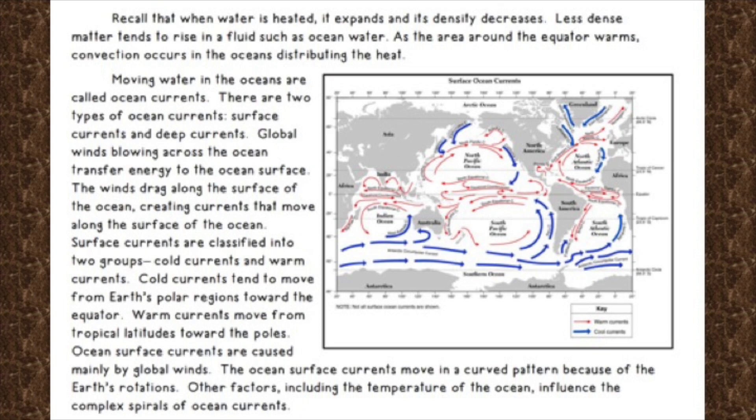Hopefully, you recall that when water is heated, it expands and its density decreases. Less dense matter tends to rise in a fluid such as ocean water. As the area around the equator warms, convection occurs in the oceans distributing the heat. Moving water in the oceans are called ocean currents. There are two types of ocean currents, surface currents and deep currents. Global winds blowing across the ocean transfer energy to the ocean. The winds drag along the surface of the ocean, creating currents that move along the surface of the ocean. Surface currents are classified into two groups, cold currents and warm currents. Cold currents tend to move from Earth's polar regions toward the equator. Warm currents move from the tropical latitudes toward the poles. Ocean surface currents are caused mainly by global winds. The ocean surface currents move in a curved pattern because of the Earth's rotation. Other factors, including the temperature of the ocean, influence the complex spirals of ocean currents.